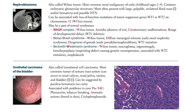Let's talk about nephroblastoma, also called Wilms tumor. It is the most common renal malignancy of early childhood, typically presenting at age two to four. It contains embryonic glomerular structures and most often presents with a large palpable unilateral flank mass and/or hematuria, with possible hypertension.